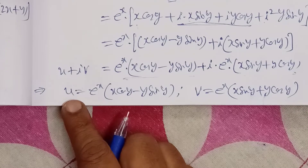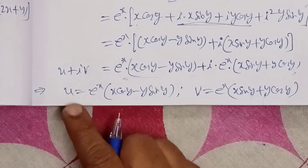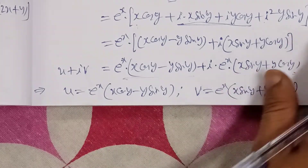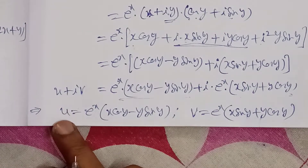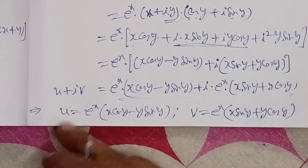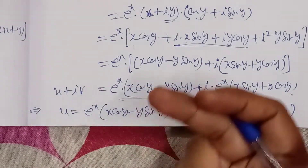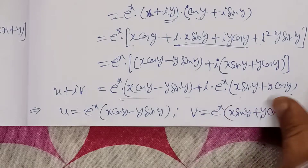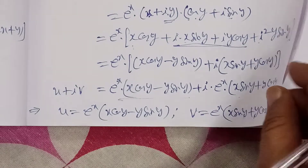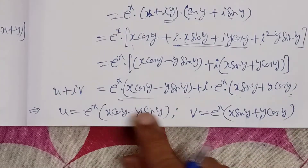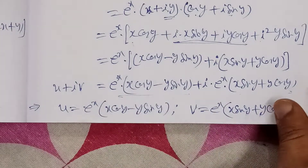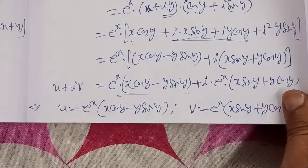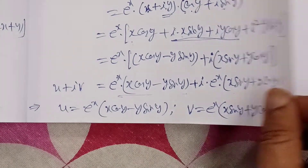Now, for verification of the Cauchy-Riemann equations, we need to find ∂u/∂x, ∂u/∂y, ∂v/∂x, and ∂v/∂y — all partial derivatives of u and v with respect to x and y.